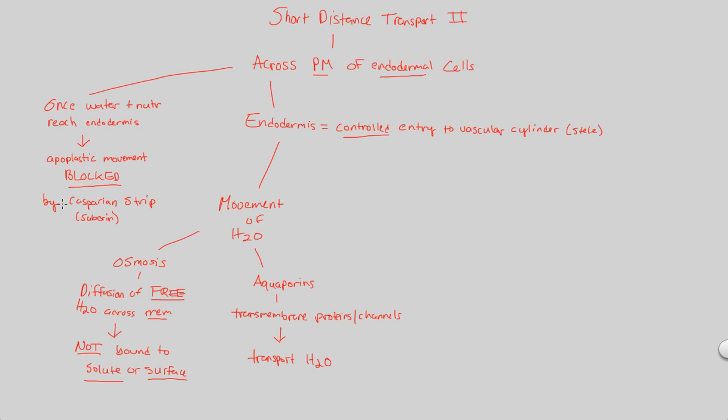So, remember we have this problem. We're blocked by the Casparian strip. We cannot move through the cell walls anymore. We cannot go any further than the cell wall, at least. How do we get across the plasma membrane, then? Well, we can either use osmosis if we're a free H2O molecule or use aquaporins, which allow us to transport H2O. Now, this is in the case of pure H2O.